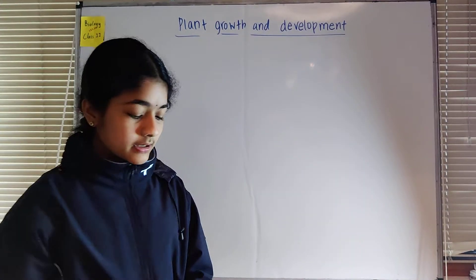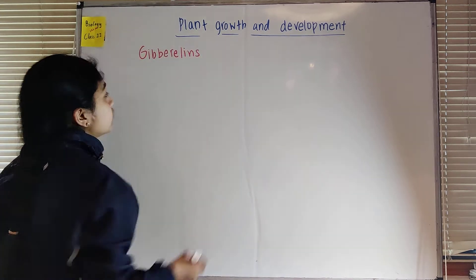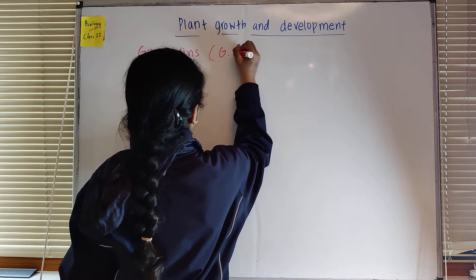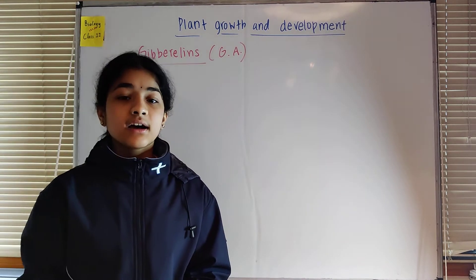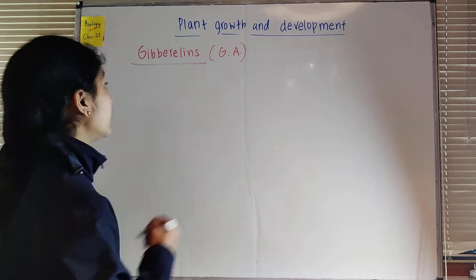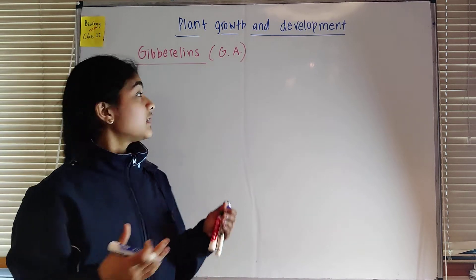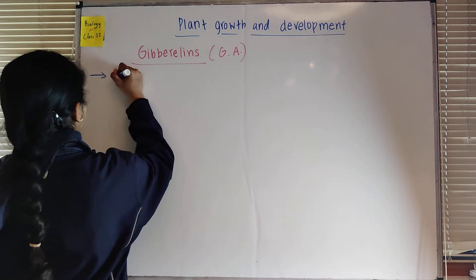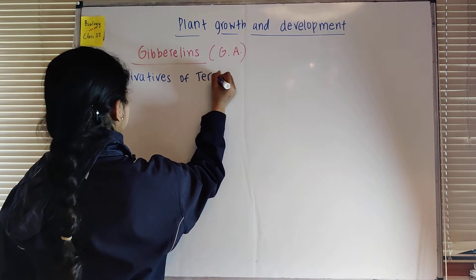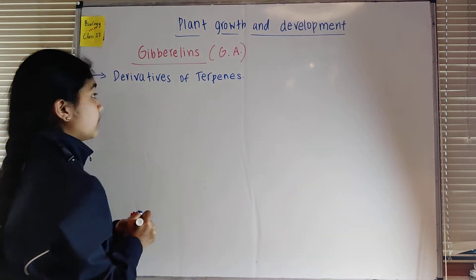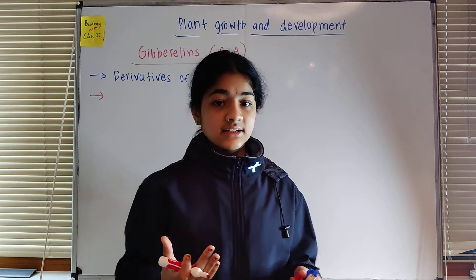In this video we'll discuss gibberellins. These phytohormones are also known as gibberellic acid, or GA in short form. These are plant growth regulators and promoters — that means they promote plant growth. These gibberellins are derivatives of terpenes; that is their chemical composition.